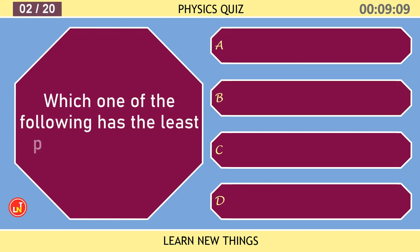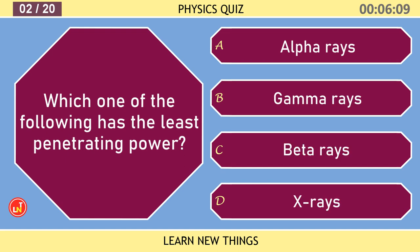Which one of the following has the least penetrating power? Alpha rays.